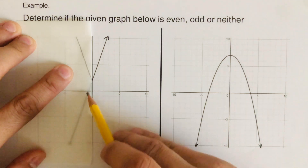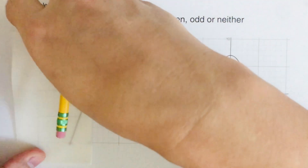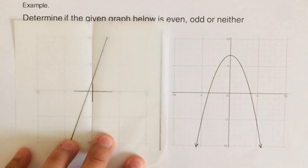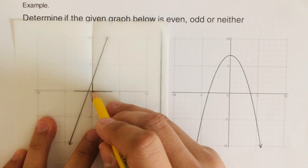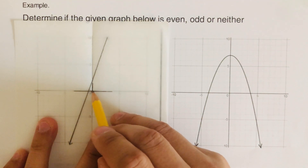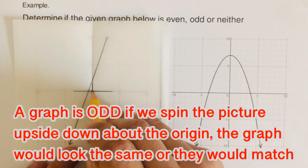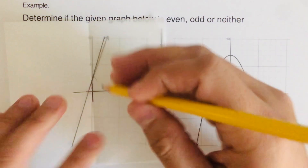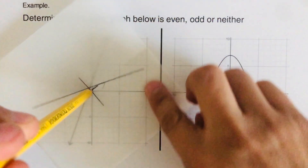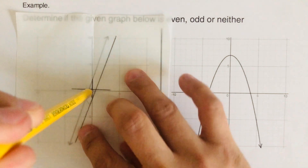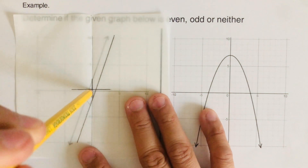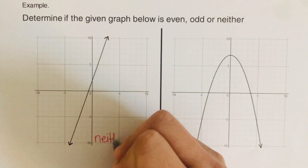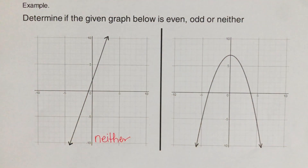Once we fold it, the ends don't match — one goes up and the other goes down to the lower left. So this is not even. Now for the odd test, we put a pencil at the point of origin, spin the picture upside down, and see if the patty paper graph and the original graph match up. They are not a match — they are parallel. So this is not even and not odd — this graph is neither.